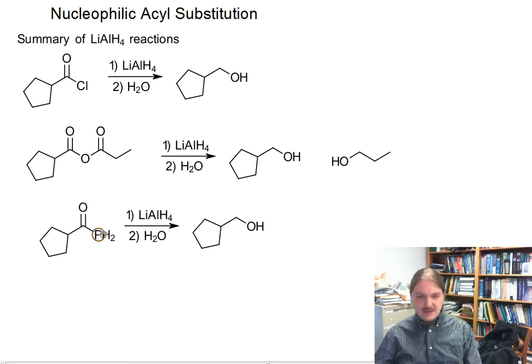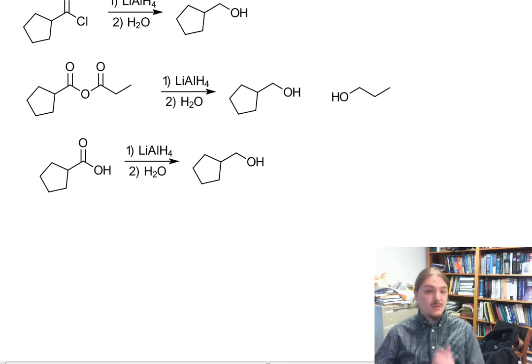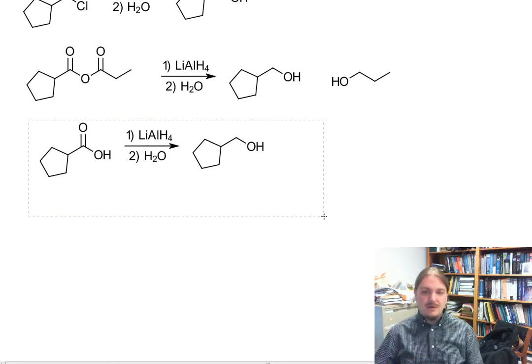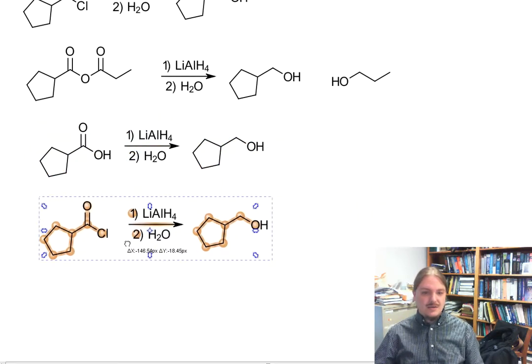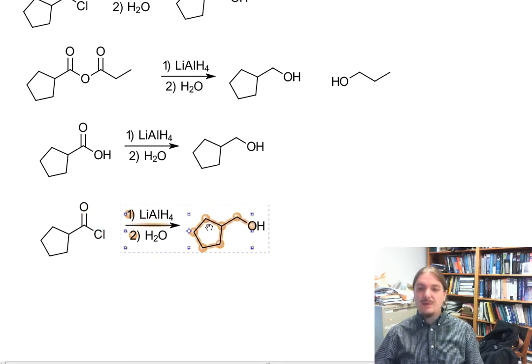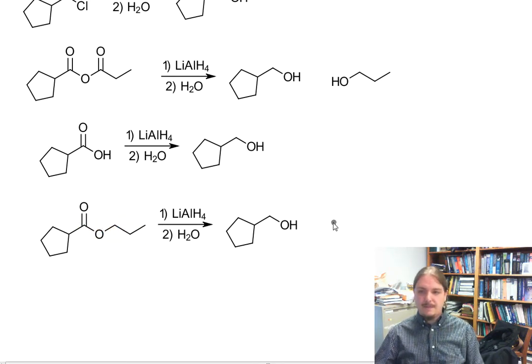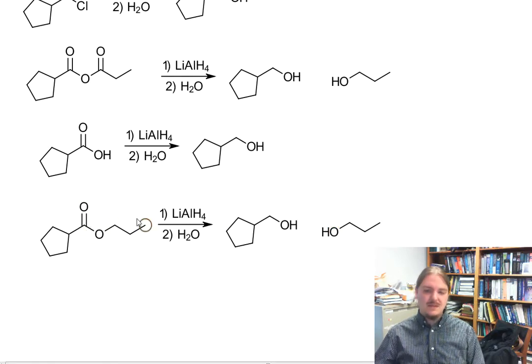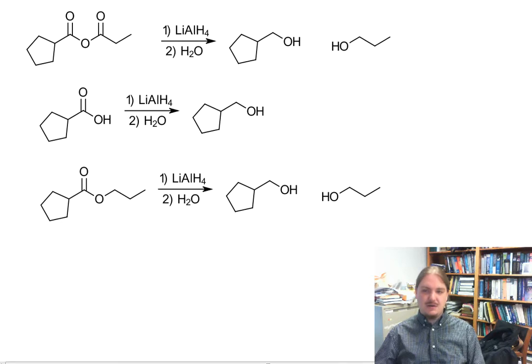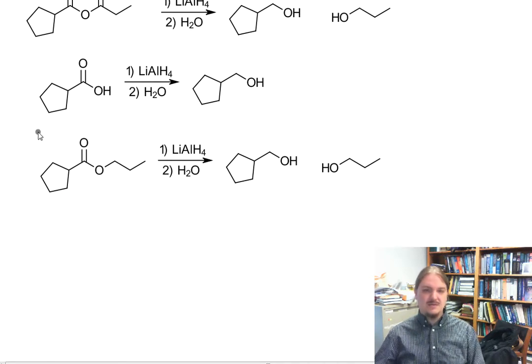Of course, carboxylic acids also react with lithium aluminum hydride to make primary alcohol, and esters react with lithium aluminum hydride to form primary alcohols. And again, because the alkoxy group of an ester comes off as a leaving group, you get two alcohols out of the ester reduction.